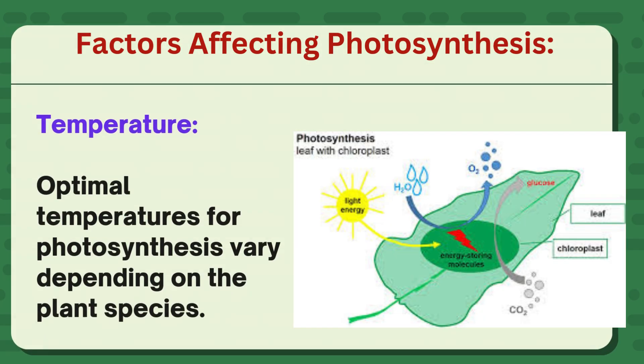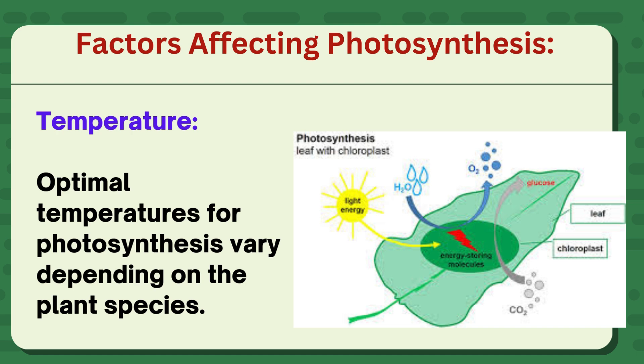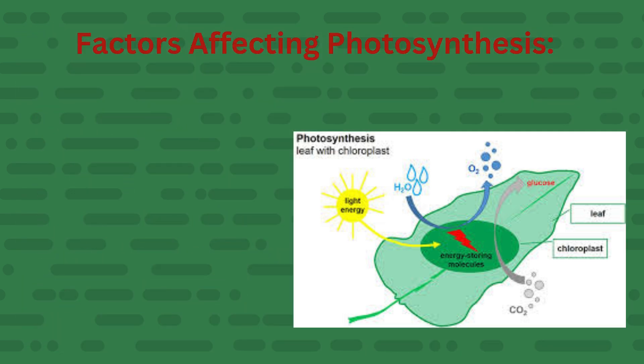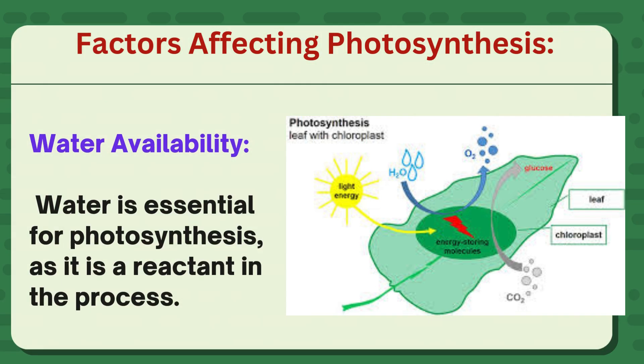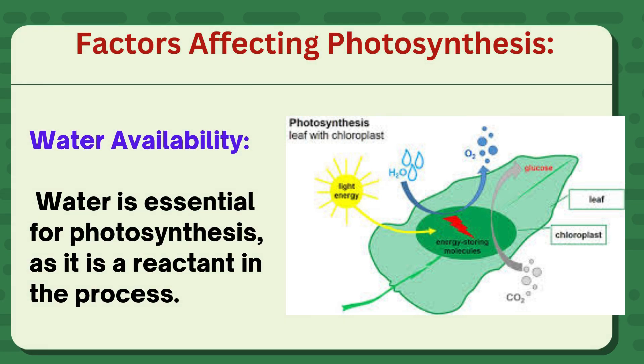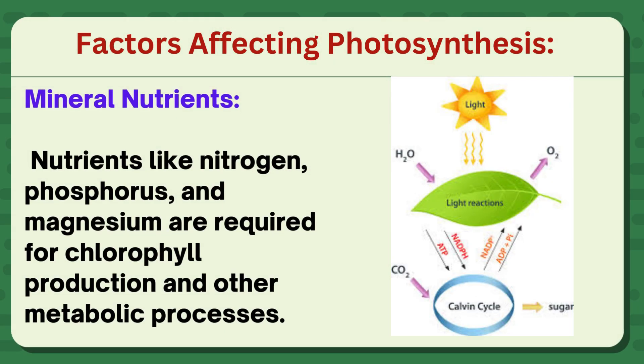Temperature: optimal temperatures for photosynthesis vary depending on the plant species. Water availability: water is essential for photosynthesis, as it is a reactant in the process. Mineral nutrients: nutrients like nitrogen, phosphorus, and magnesium are required for chlorophyll production and other metabolic processes.